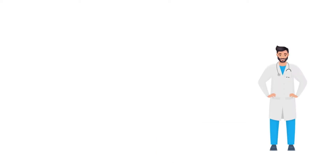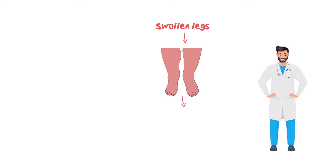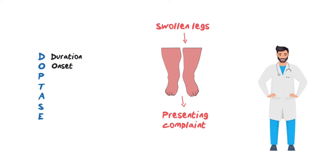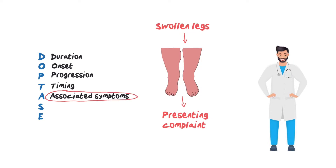Let's get into the nitty gritty of this history taking. There are different ways you can approach the presenting complaint. I tend to use an acronym called DOCTASE. D stands for duration, O for onset, P for progression, T for timing, A for associated symptoms — which is mainly what this history is going to revolve around, so that is where you get most of your points — S for severity, and E for exacerbating factor.